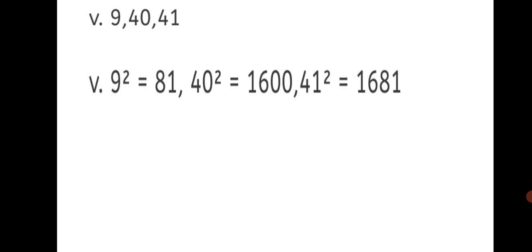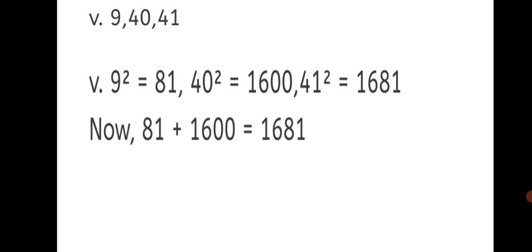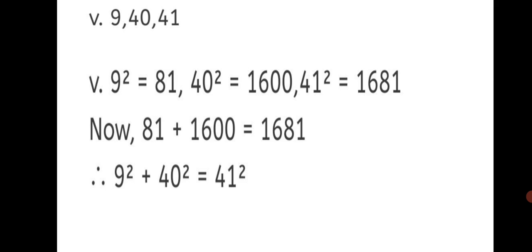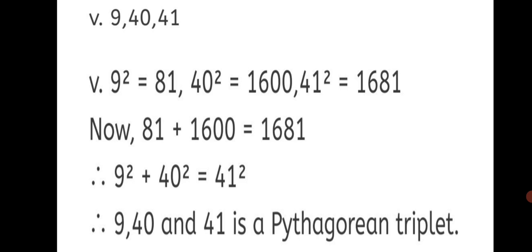Question number 5: 9, 40, 41. The squares: 9 square is 81, 40 square is 1600, and 41 square is 1681. Adding the two smaller squares: 81 plus 1600 is equal to 1681, which is also the square of 41. Therefore, 9 square plus 40 square is equal to 41 square. Therefore, 9, 40, and 41 is a Pythagorean triplet.